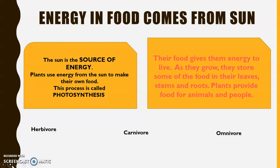The food gives plants energy to live, and as they grow they store some of that food in their leaves, stems, and roots. Plants provide food for animals and people, so this energy is transferred from their leaves, roots, and stems onto us and onto the animals. It doesn't matter if you are a herbivore, a carnivore, or an omnivore — we all get our energy from the food we eat, and those plants get their energy from the sun. That's why we say the sun is the source of energy.